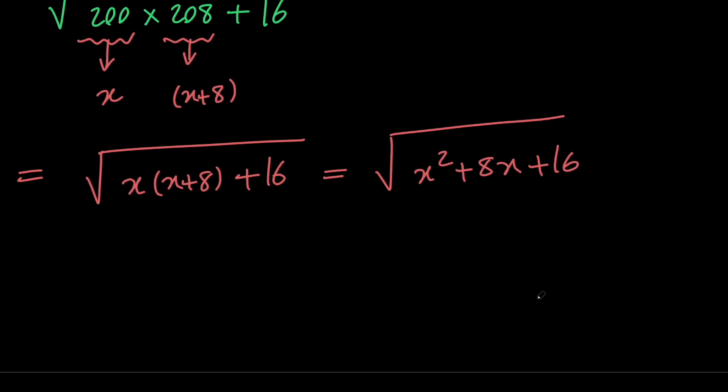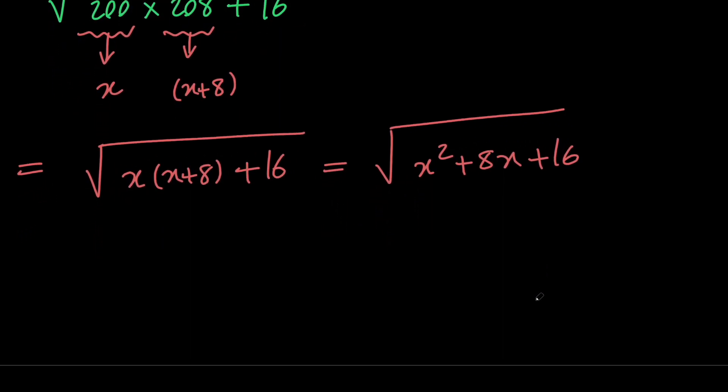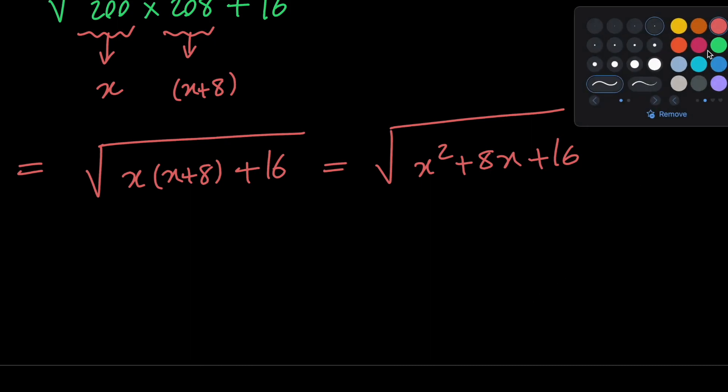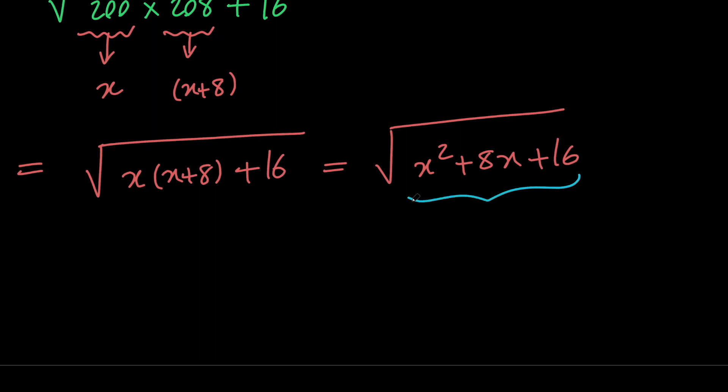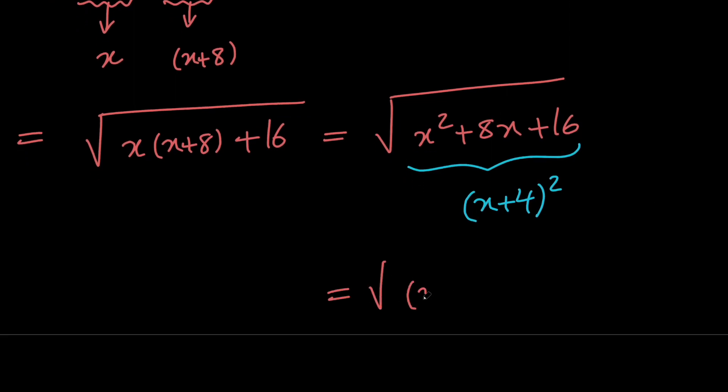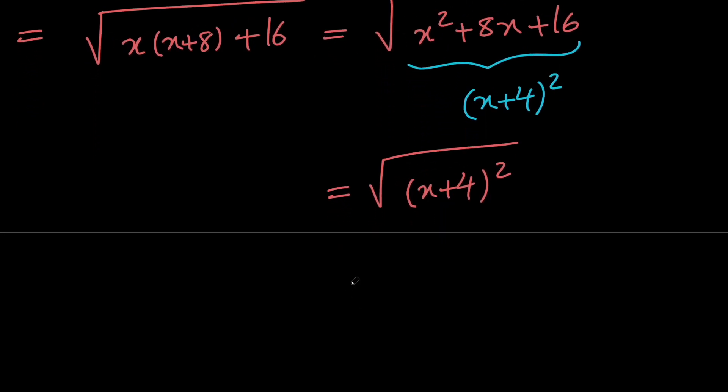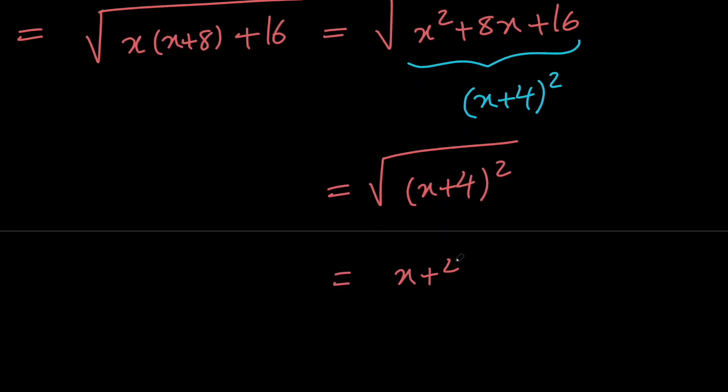Now, notice that this expression, x squared plus 8x plus 16, is a perfect square, and it is equal to x plus 4 quantity squared. So we have the square root of x plus 4 quantity squared, which equals x plus 4 if x plus 4 is positive.